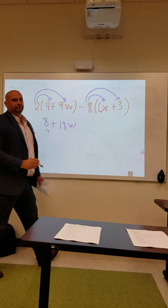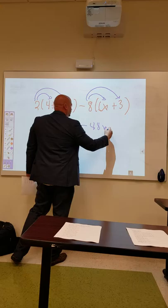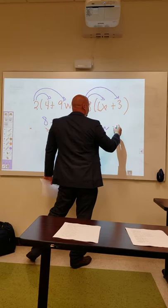And then we distribute the negative 8 to the positive 6x, and the negative 8 to the 3. So negative 8 times 6x is negative 48x, and negative 8 times 3 is negative 24.